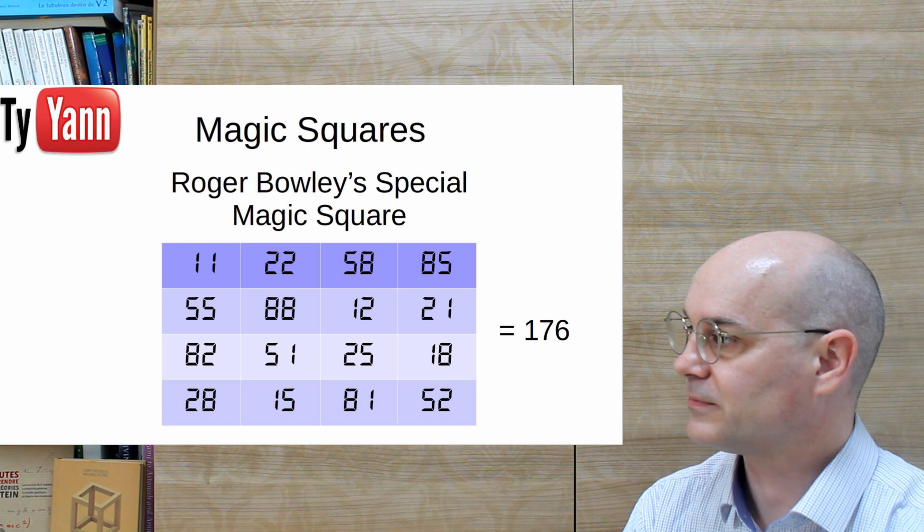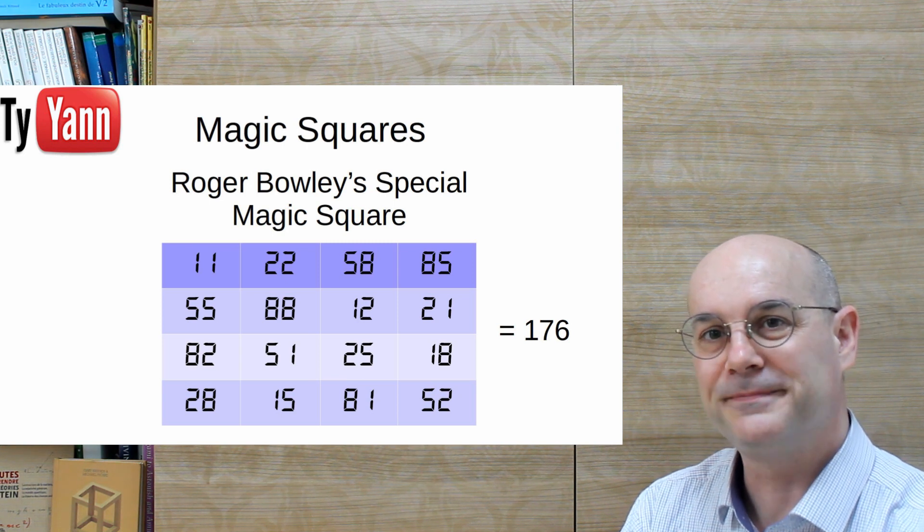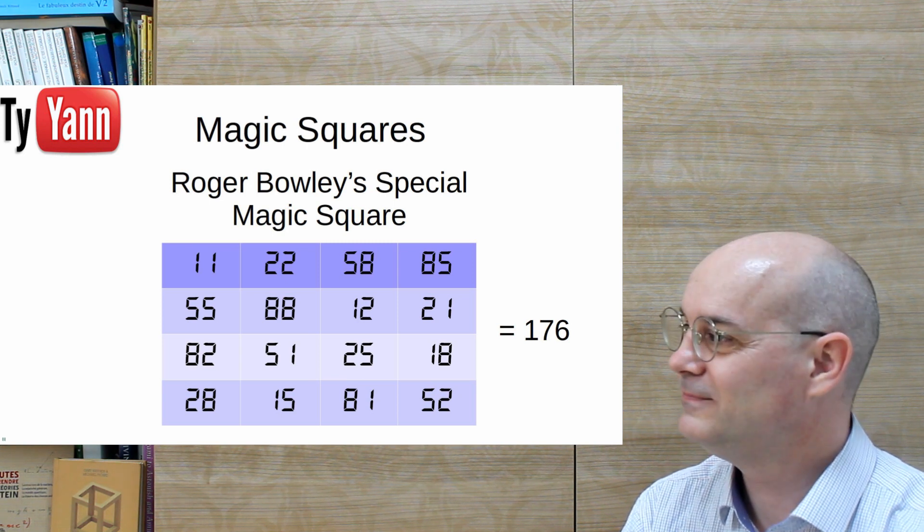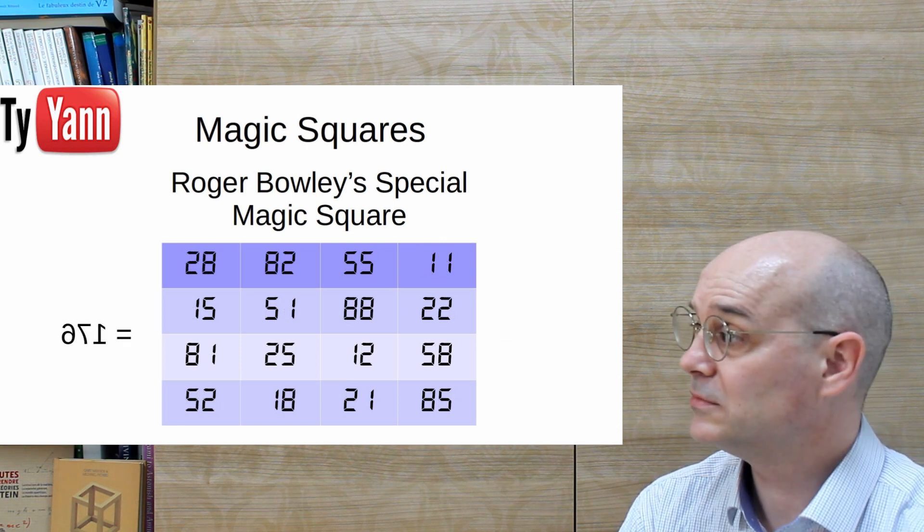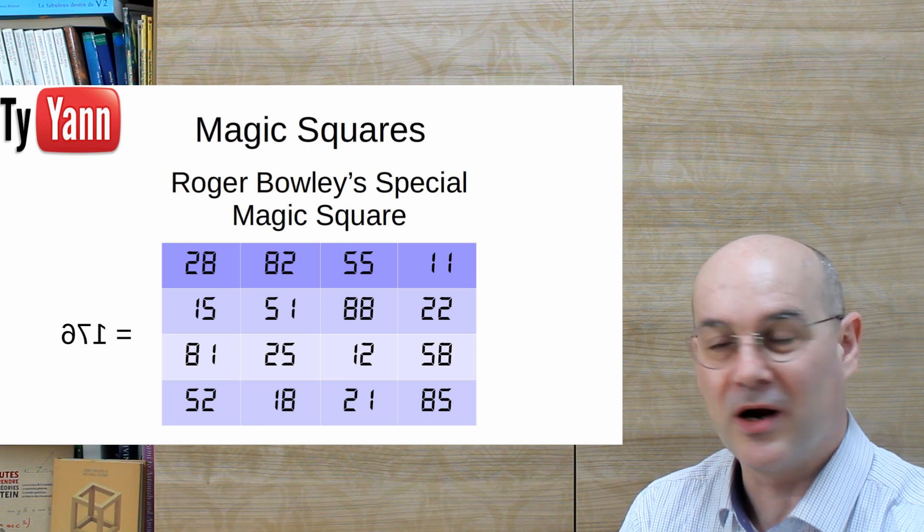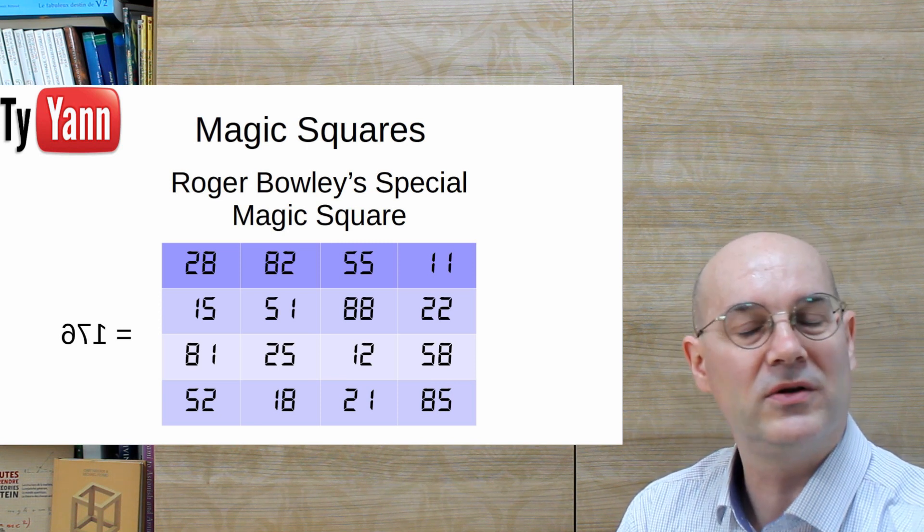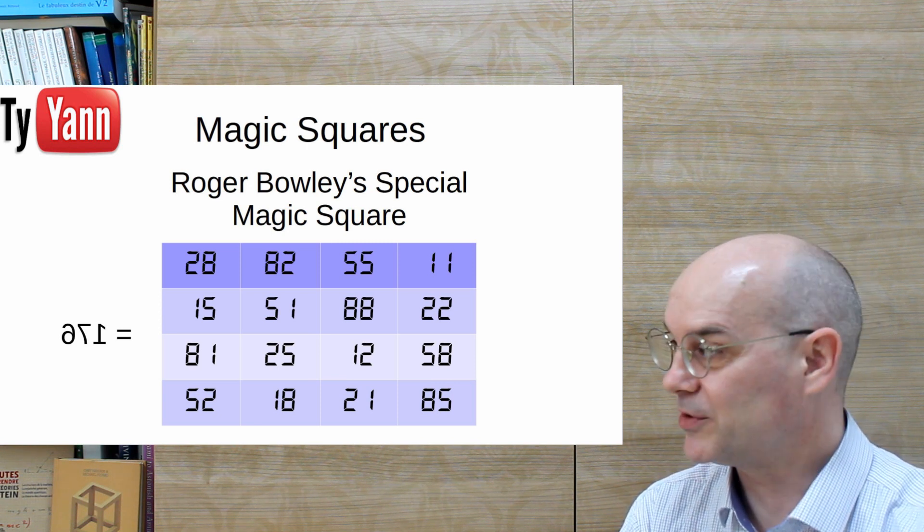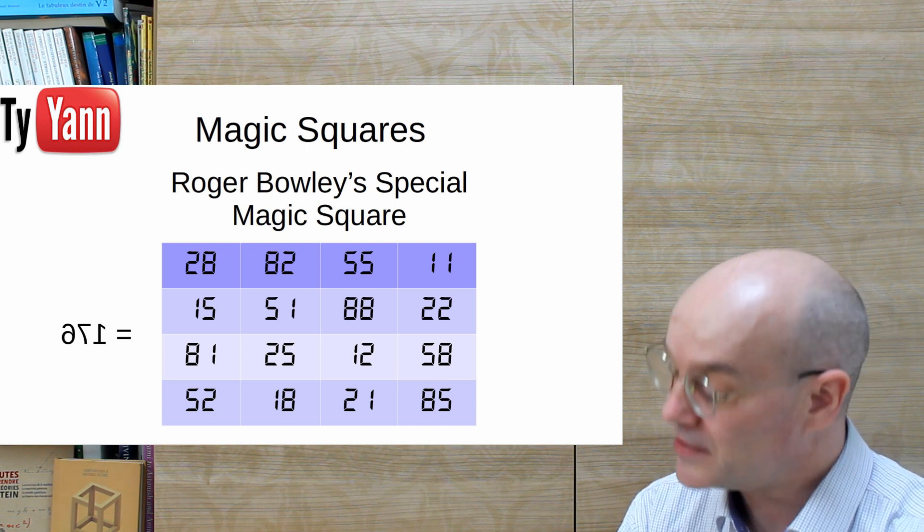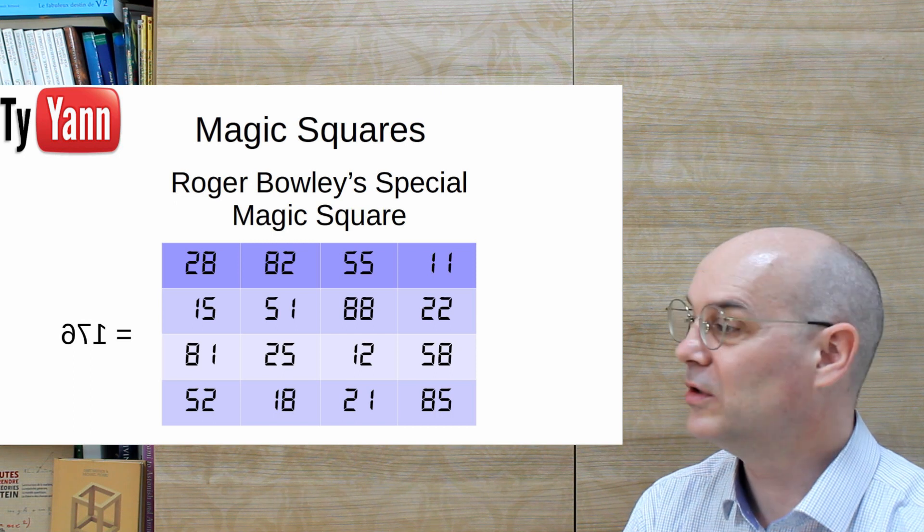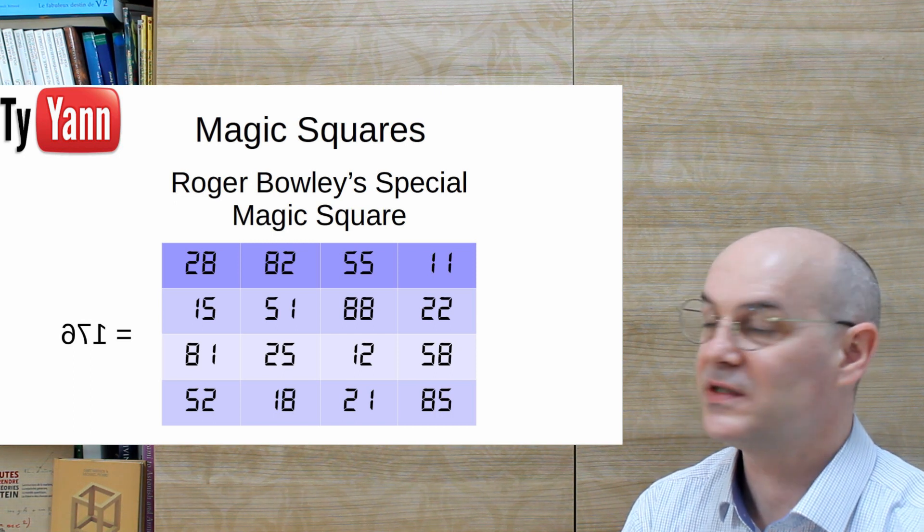A new magic square with exactly the same properties, which mean that the rows, the columns, the diagonals, and the center equal to 176. And you know what?